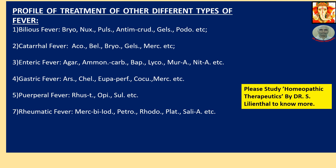2. Catarrhal Fever. Remedies: Aconite, Belladonna, Bryonia, Gelsemium, Nux Vomica. 3. Enteric Fever. Remedies: Agaricus, Ammonium Carbonicum, Baptisia, Lycopodium, Muriatic Acid. 4. Gastric Fever. Remedies: Arsenicum, Chelidonium, Eupatorium Perfoliatum, Cocculus, Nux Moschata, Sal.